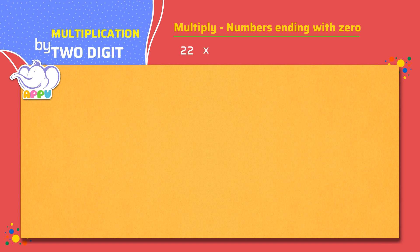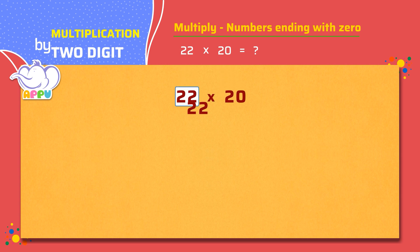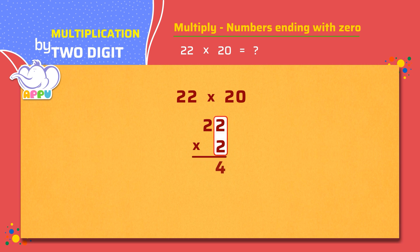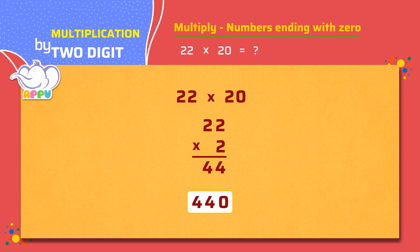Multiply 22 times 20. We multiply 22 times 2 first. 2 times 2 equals 4, and 2 times 2 equals 4, so here we get 44. Then place this zero at the end, so the answer is 440.